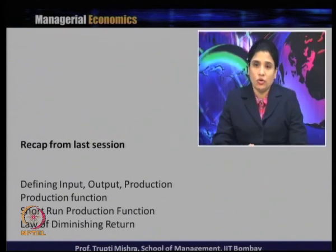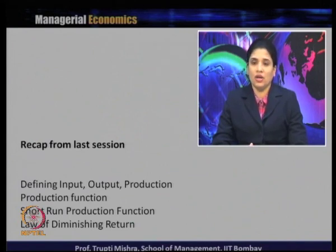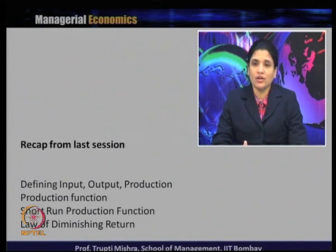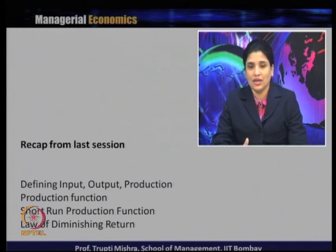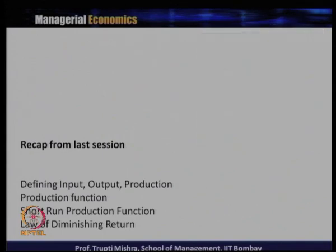In the case of short run production analysis, we understood the law of diminishing returns — how the total product decreases when you keep one input fixed and go on increasing the other inputs. After a certain threshold point, the total product decreases, average product decreases, and marginal product leads to a negative segment. In today's class we are going to discuss the long run analysis of production, specifically the return to scale.